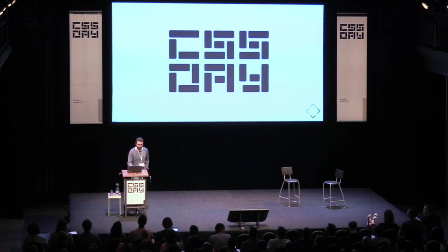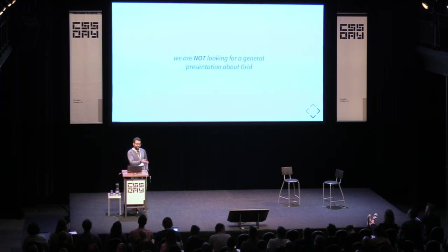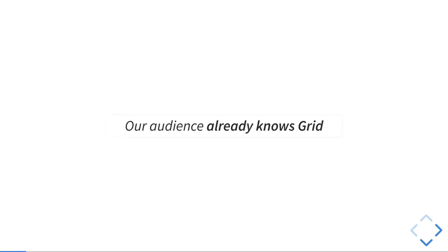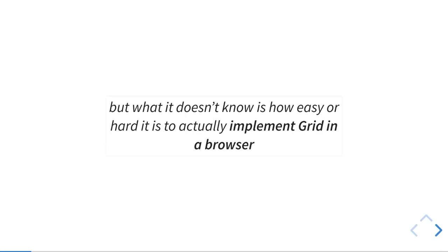The mail was quite explicit. It started with: we don't want you to talk about grid — about how it works in general. We want you to explain how hard or how easy it is to implement that in a browser, which is quite different. Basically, you already know grid, they told me, so we don't need to explain that. But you don't know what it takes to implement something like grid or some CSS property in a browser — that's kind of different.